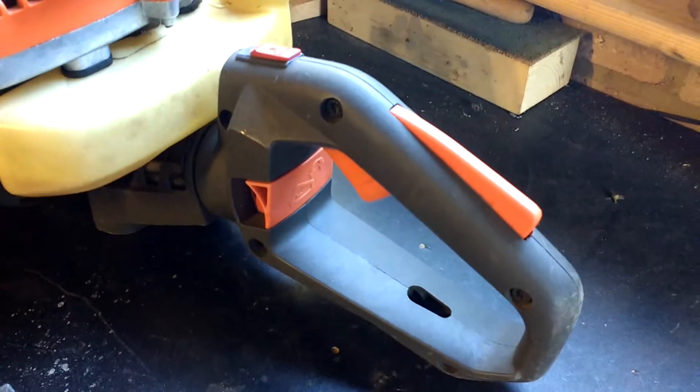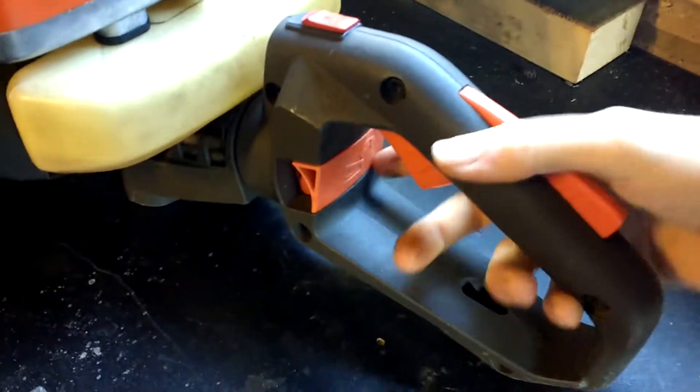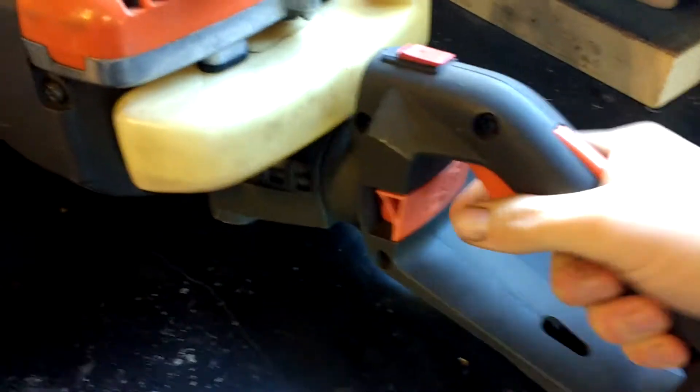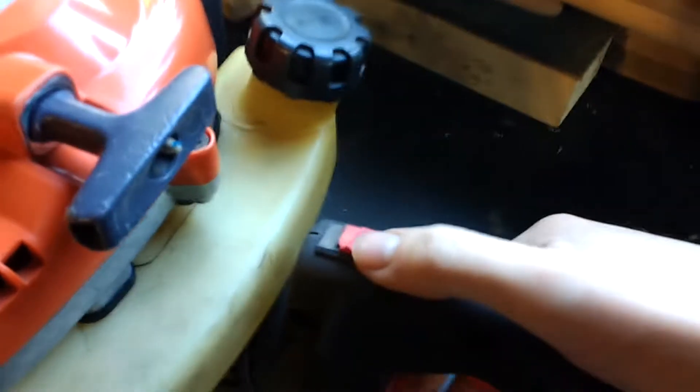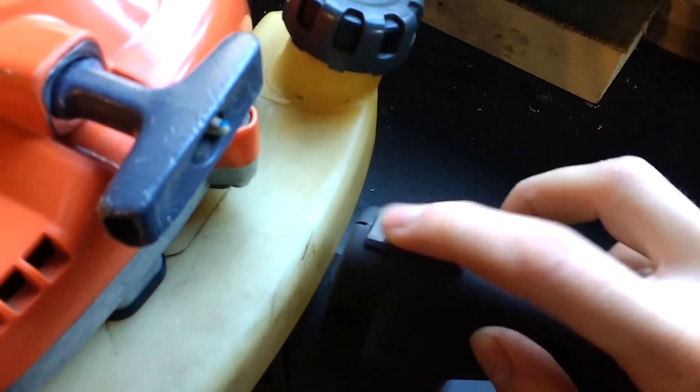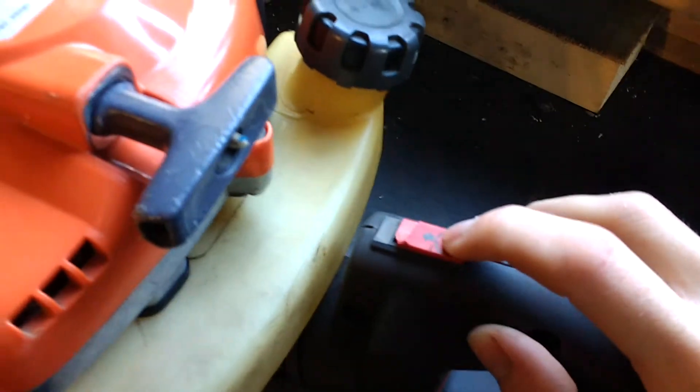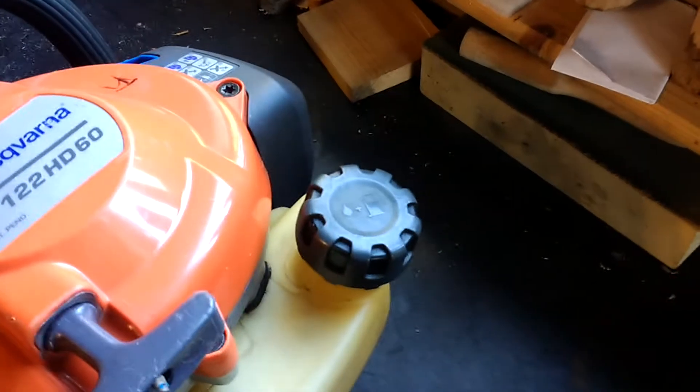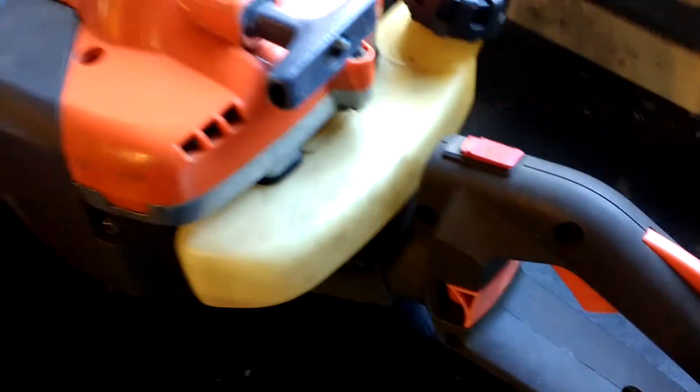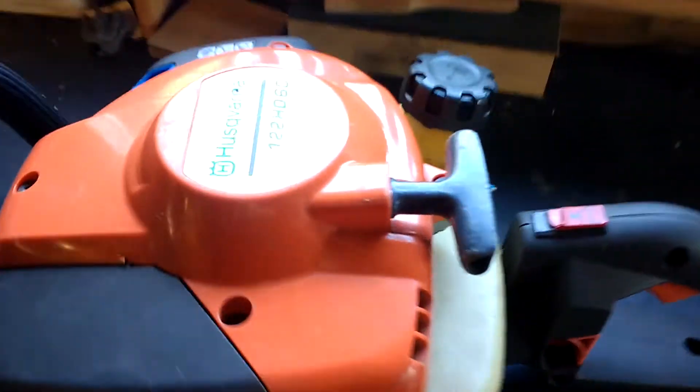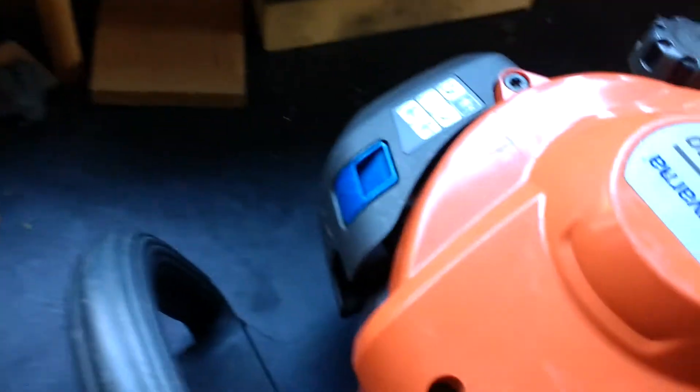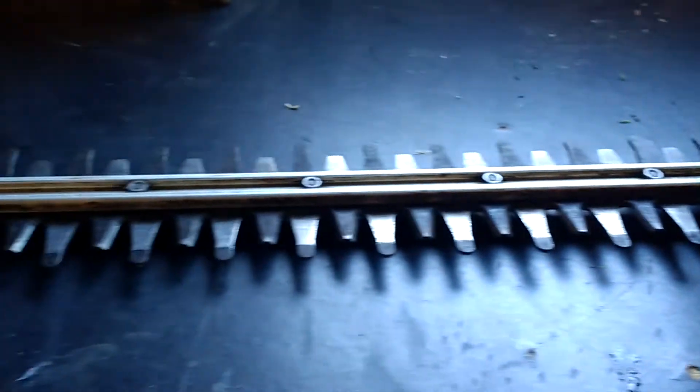So first off, I've got standard trigger assembly, swivel handle, off switch. This is supposed to have a little bit of a stick up there but that broke off. Simple fuel cap, pull start.